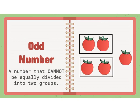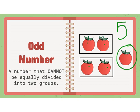An odd number is a number that cannot be equally divided into two groups. If I look at my apples, I have two groups of two but I also have an apple out here all by itself — you could call him the odd man out. In all I have five apples. So if I have five apples I can split them into two groups of two, but I will have one left over, making five an odd number.